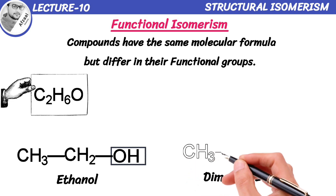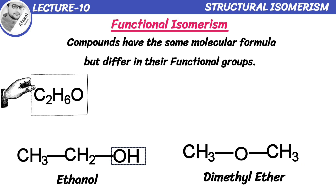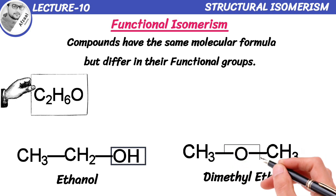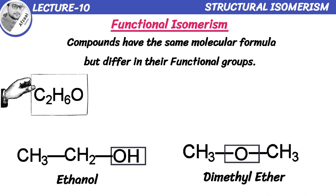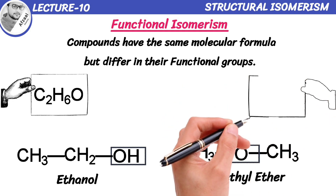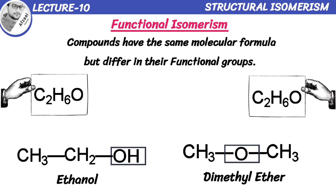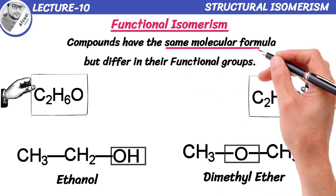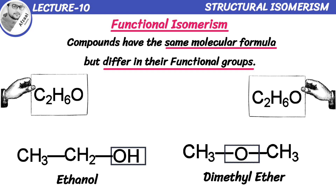On the other hand, we have dimethyl ether. It also has 2 carbon atoms and 6 hydrogen atoms, but instead of a hydroxyl group, it has an ether functional group — an oxygen atom sandwiched between 2 carbon atoms. So both isomers have the same molecular formula but different functional groups, and are known as functional isomers.